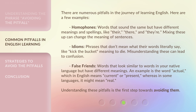False friends: words that look similar to words in your native language but have different meanings. An example is the word 'actual,' which in English means current or present, whereas in some languages it might mean real. Understanding these pitfalls is the first step towards avoiding them.